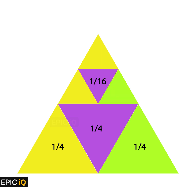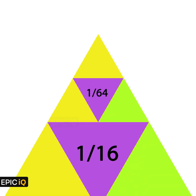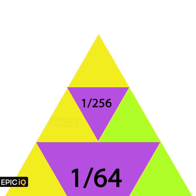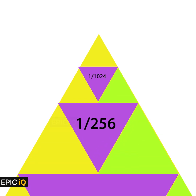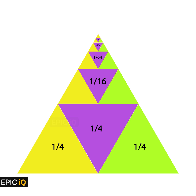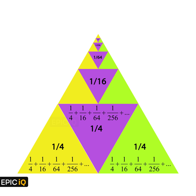We again divide this triangle into 4 equal triangles, where the area of each triangle will be 1/16. And we keep dividing the top triangle into 4 equal triangles. Each of these yellow, purple, and green colored triangles represents the infinite series 1/4 to the power n. So 3 times this sum is equal to 1, and the sum of the series will be 1/3.